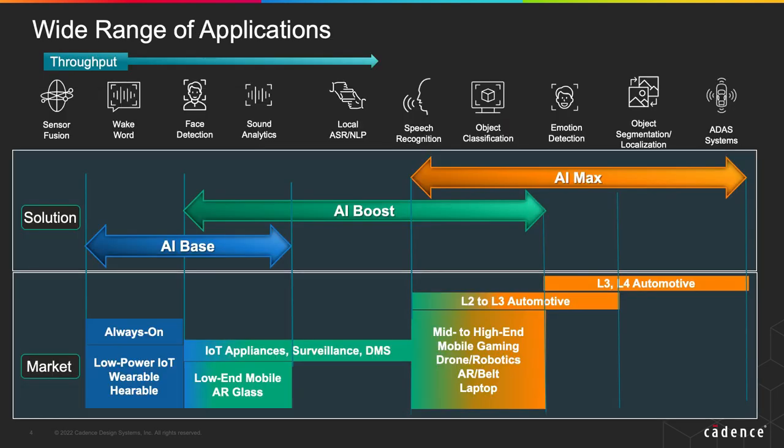The pictorial representation of the application space: on the left, we have the ultra-low-power, always-on keyword and wake-word type of applications, all the way to the right where you have high-definition video, ADAS, and so forth. And that's where these products fit.